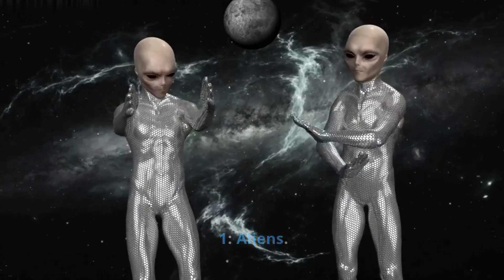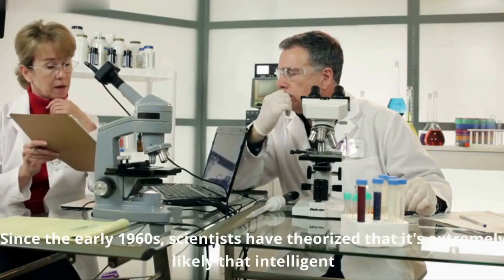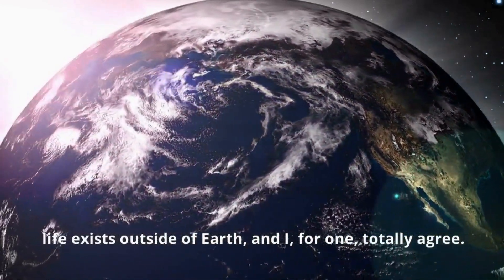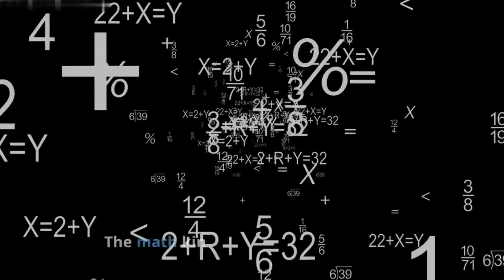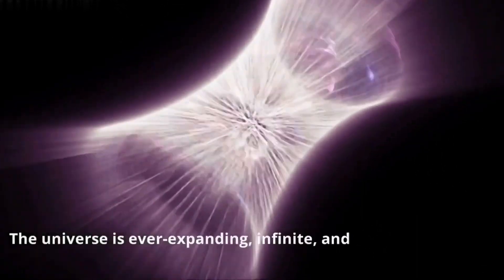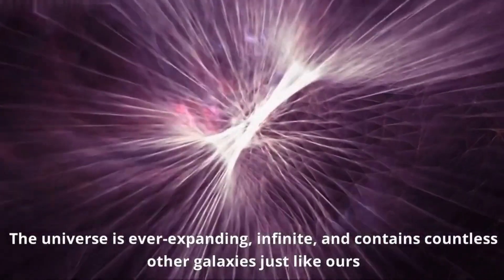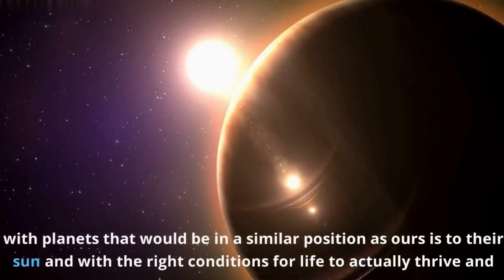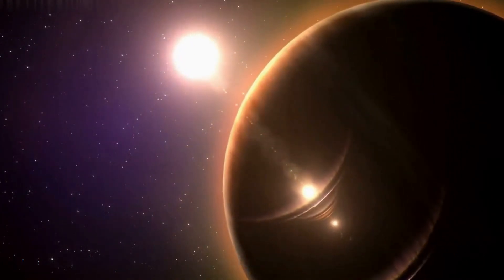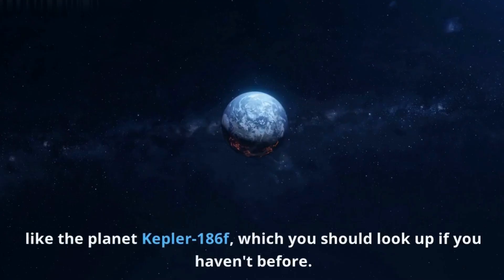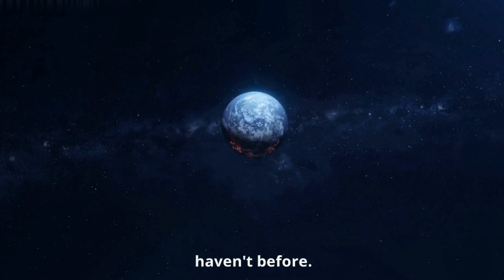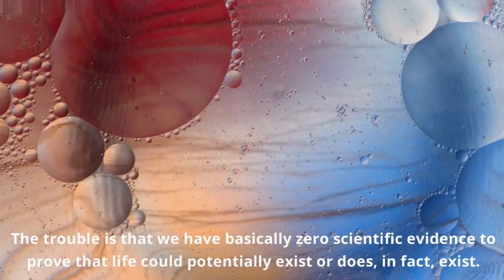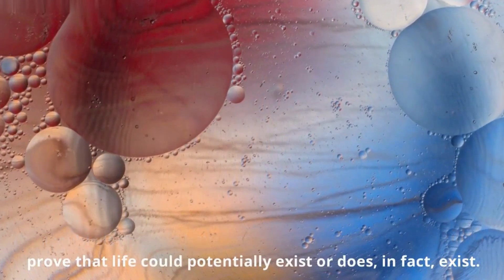Number 1. Aliens. Since the early 1960s, scientists have theorized that it's extremely likely that intelligent life exists outside of Earth, and I, for one, totally agree. The math kind of has to mean it's true. The universe is ever-expanding, infinite, and contains countless other galaxies just like ours. With planets that would be in a similar position as ours is to their sun and with the right conditions for life to actually thrive and grow. Like the planet Kepler 186f, which you should look up if you haven't before. It's kind of cool. The trouble is that we have basically zero scientific evidence to prove that life could potentially exist or does, in fact, exist.